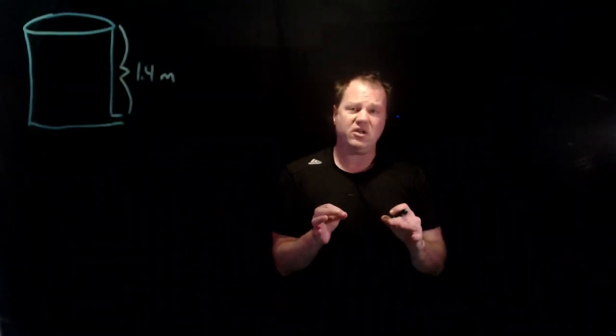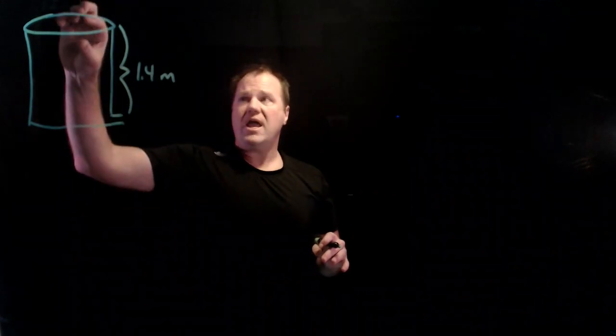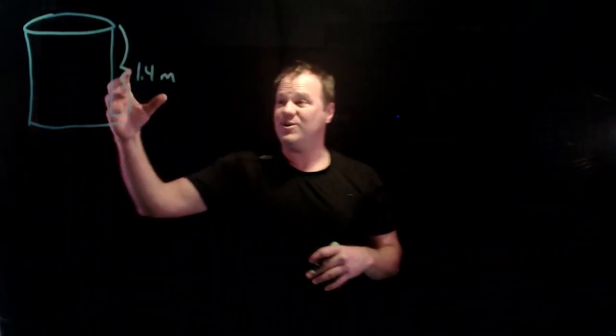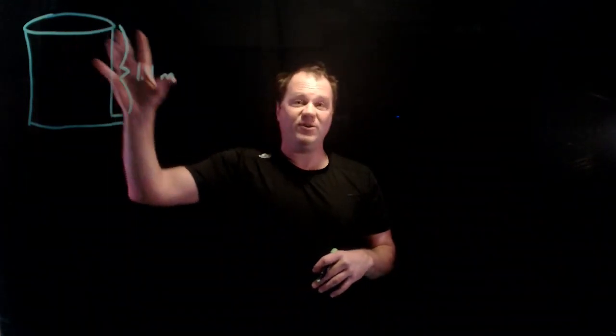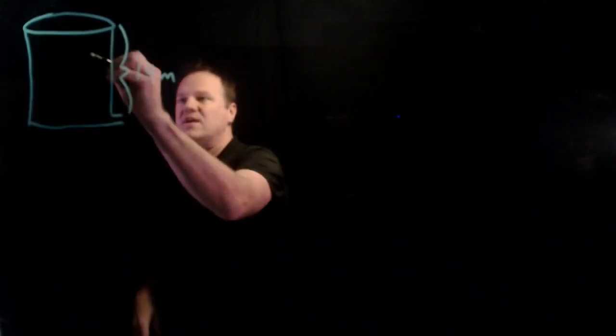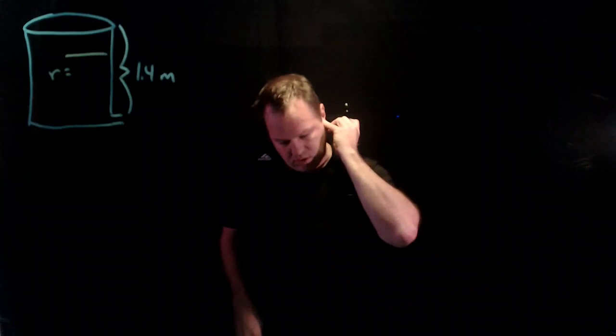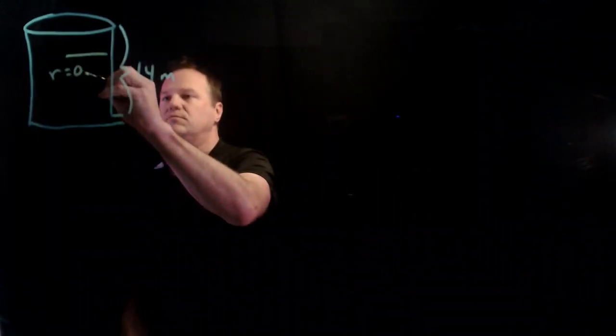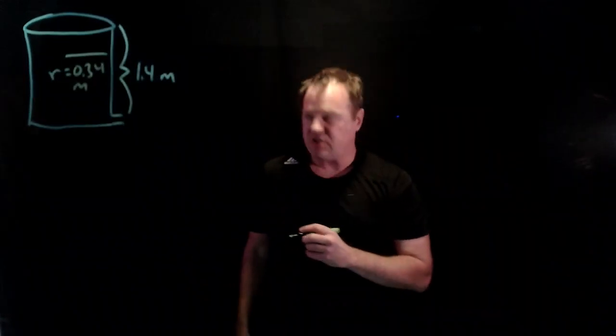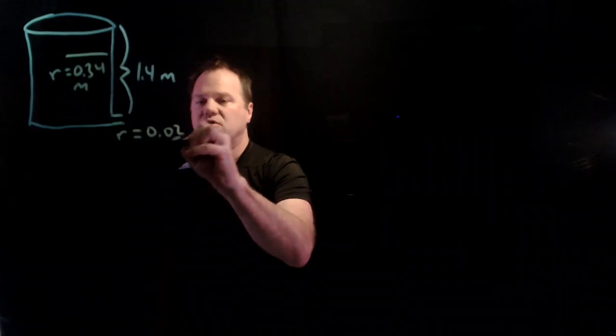To get a precise calculation we need to know how big the valve is and how big the container is. This has to be vented to the atmosphere. The radius here is equal to 0.34 meters and the radius down here is 2 centimeters. So the radius of the opening at the bottom is 0.02 meters.